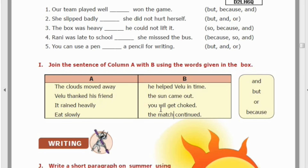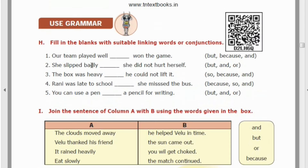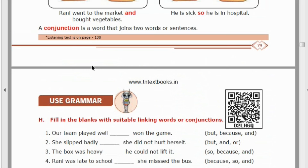Last one: 'Eat slowly ___ you will get choked.' So use the conjunction here. These are the conjunctions with examples — still, yet are also conjunctions.